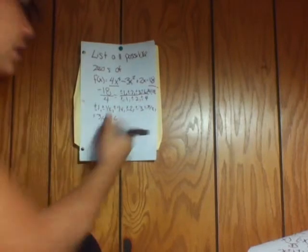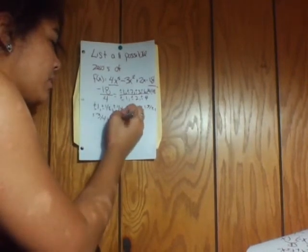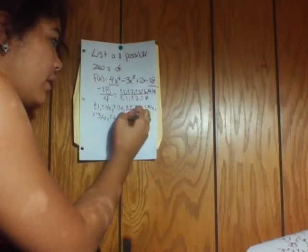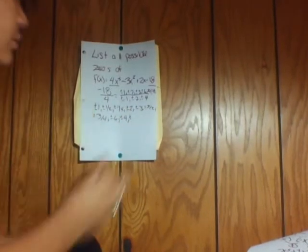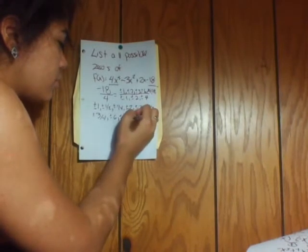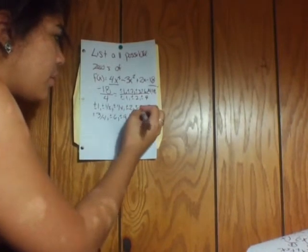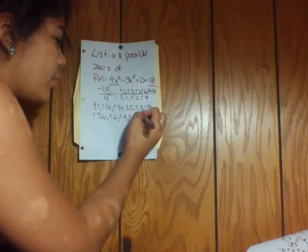So you can skip to your 9. It would be plus or minus 9, and it would be plus or minus 9/2, and then it would be plus or minus 9/4.